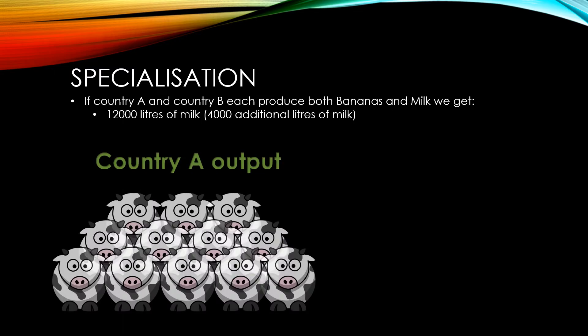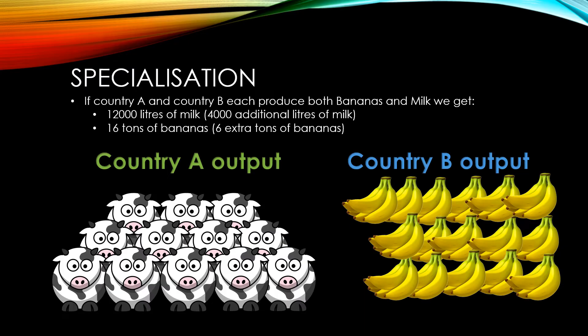Now let's look at what happens if each country specialises in what they're best at producing. Country A now puts all their resources towards producing milk and is able to produce 12,000 litres — an additional 4,000 litres. Meanwhile, country B puts all their resources towards producing bananas and is able to produce 16 tonnes — six additional tonnes compared to what would have been produced if both countries produced both milk and bananas. From this simple example, you can see that specialisation increases total world output through international trade.